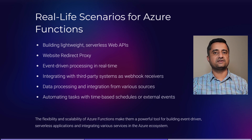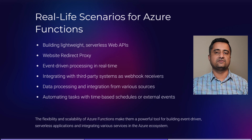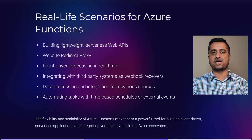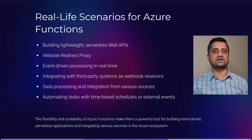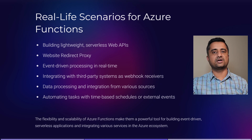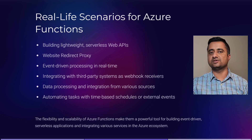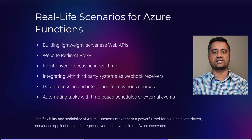The third one is event processing in real time. Whenever there is an event getting triggered, you could use Azure Function Apps to do a specific activity. In my case, there was a situation where if there is a form submission happening, then I need to trigger a particular message to a Service Bus. So it is acting more like a proxy — receiving the message from the HTML page and then pushing it into the Service Bus. We wanted one layer of security where we didn't want to expose our Service Bus, so my Service Bus is never exposed out to the public.